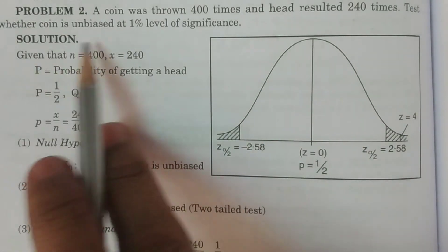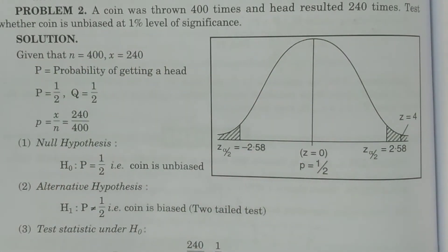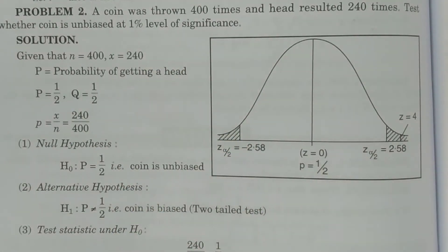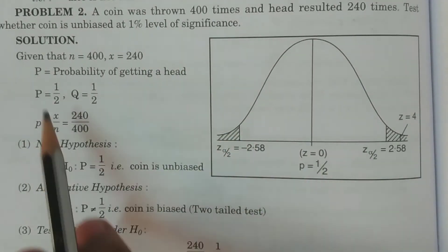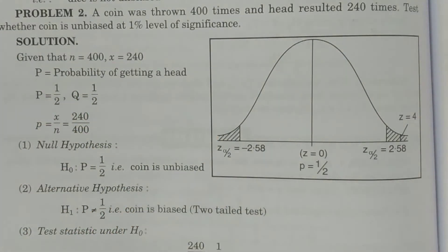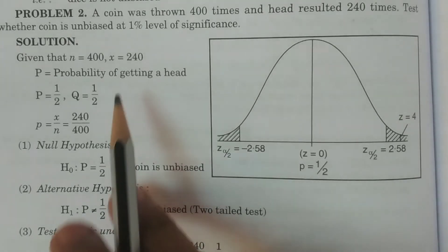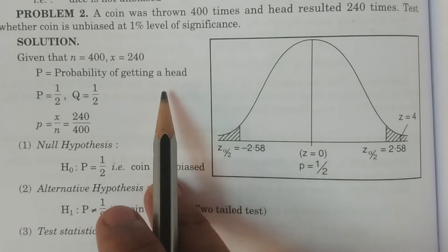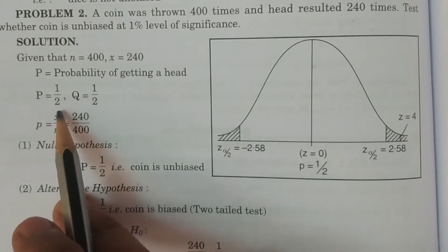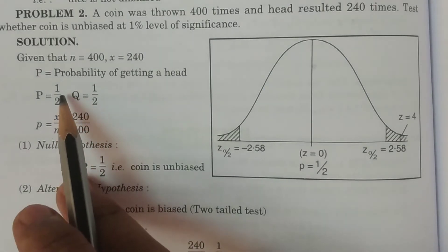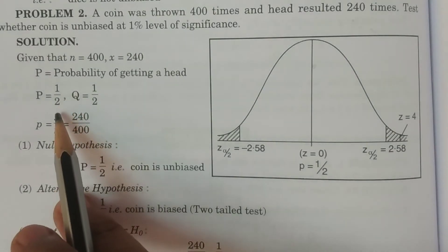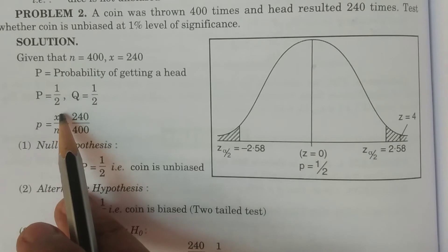Now, test whether the coin is unbiased at 1% level of significance. Capital P is the probability of getting a head — the population proportion. For an unbiased coin, total outcomes are two and favorable outcome is one, so capital P is equal to one by two. Capital Q equals one minus P, which is also one by two.